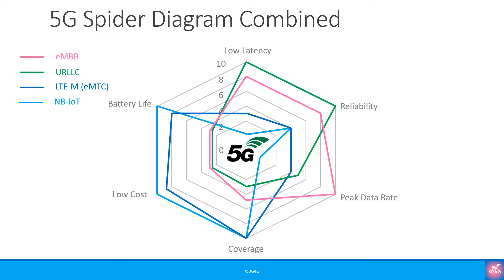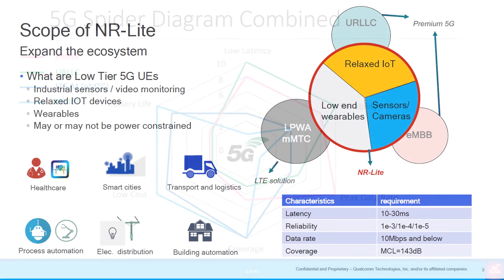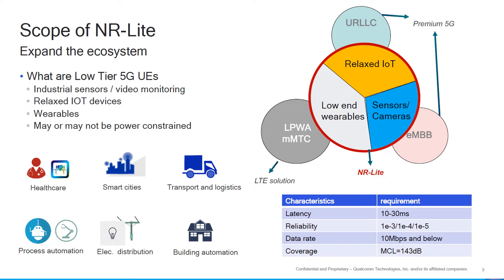Here is the combined spider chart with eMBB, URLLC, LTE-M, and NB-IoT. As shown in a slide from Qualcomm, there is a requirement for devices that fall in between eMBB, URLLC, and massive machine type communications. Examples of these include wearables, sensors, cameras, and relaxed IoT. While one could argue that eMBB devices could also serve as wearables or sensors, it doesn't make sense economically, and this is the void that REDCap is trying to fill.